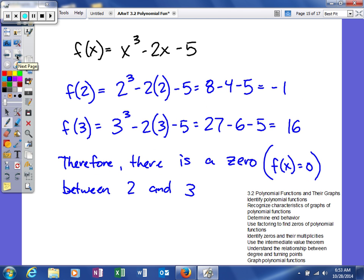Let's look at an example. f(x) = x³ - 2x - 5. To find f(2), you plug in 2 and get -1. When you find f(3), you plug in 3 and get a value of 16.